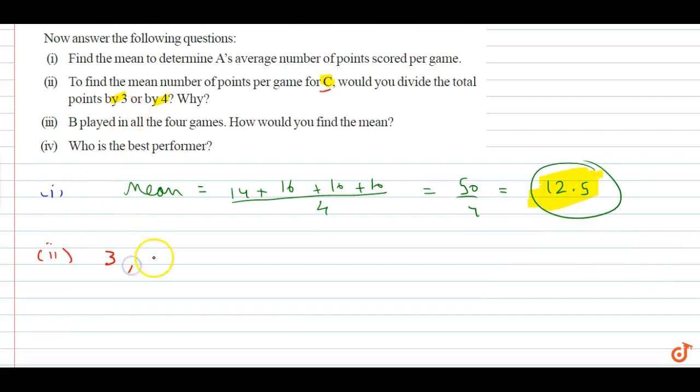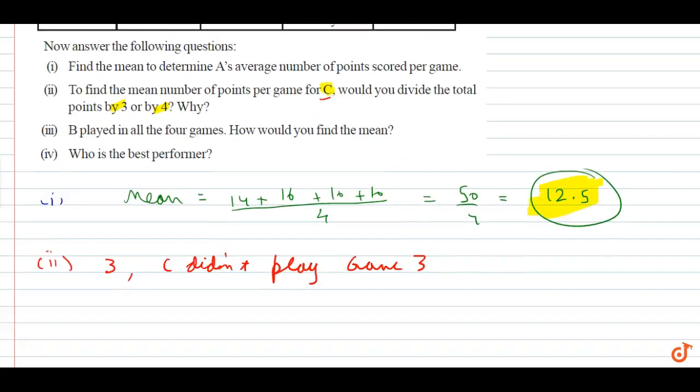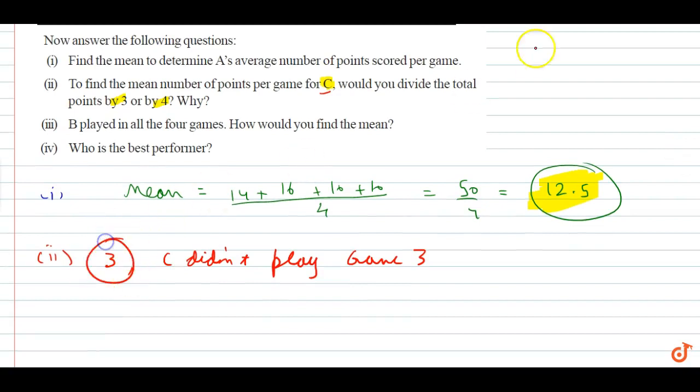So the answer is 3, because C didn't play game 3. So C didn't play the third game, so it won't be counted. So the answer is 3.